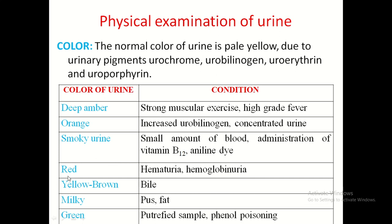Smoky urine is due to a small amount of blood or administration of vitamin B12 or aniline dye. Red colour urine indicates haematuria or haemoglobinuria — presence of blood or haemoglobin in urine. Yellow to brown colour is due to bile, either bile salts or bile pigments. Milky urine is due to pus or excessive fat in urine. Green colour occurs due to putrefied samples or phenol poisoning.